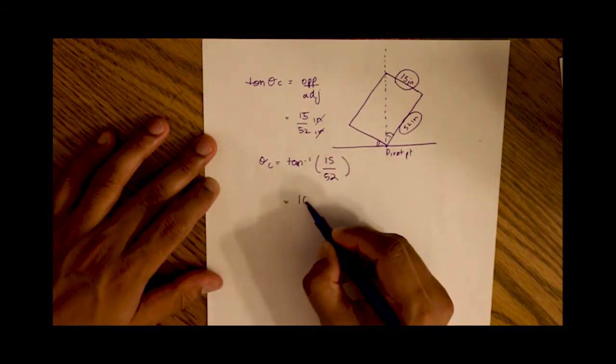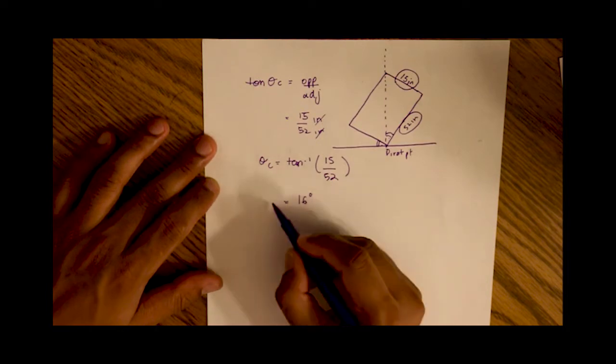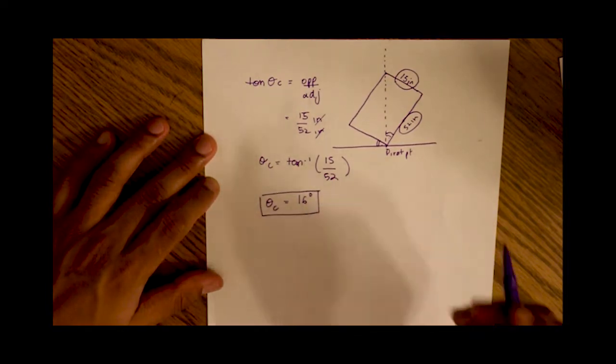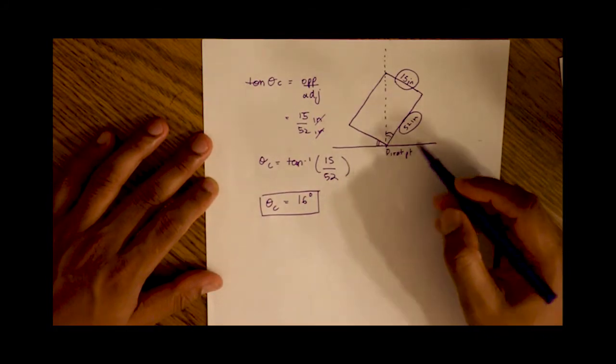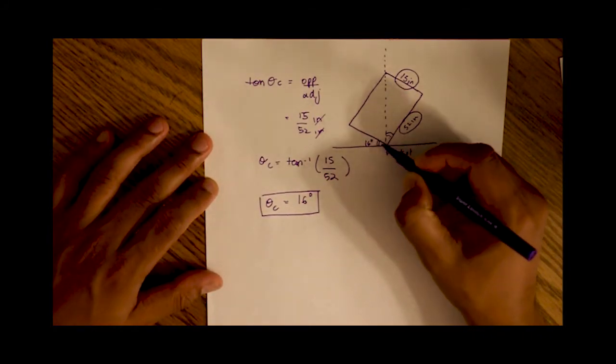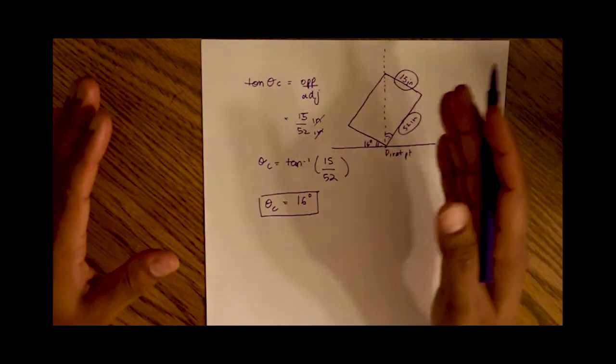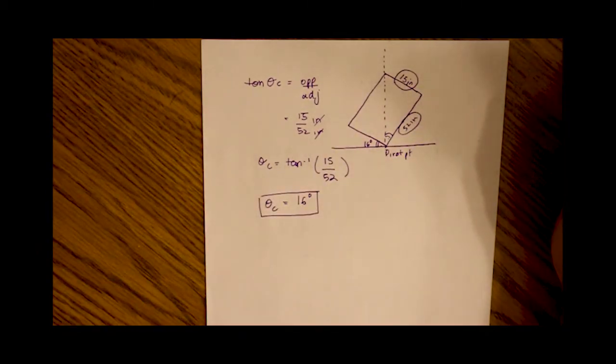And this angle happens to be, I believe, 16 degrees. So that's our critical angle, which is what was asked of us in the question. So this angle is 16 degrees right here. A little more, 16.5, it would tip over. A little less, it would go that way. That's how you solve the problem.